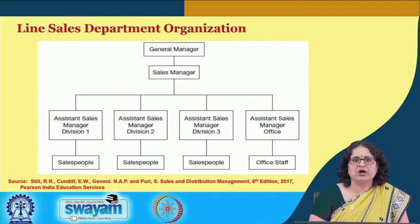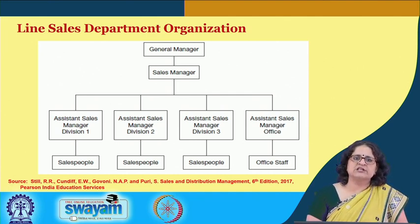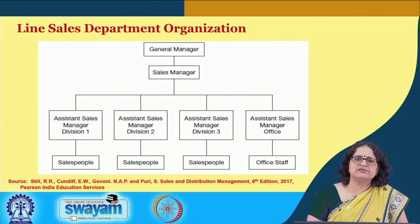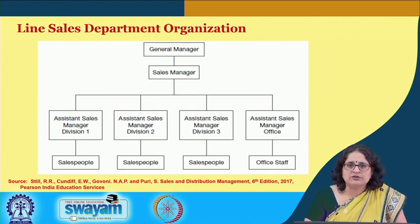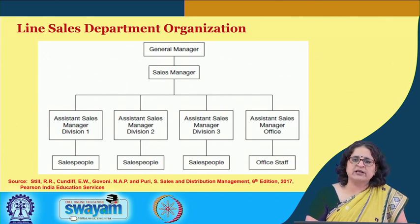In a line sales organization, you have a general manager, and under him the sales manager, then assistant sales managers for division 1, 2, 3, and 4. The assistant sales managers of the four divisions report to the sales manager. Under division 1, the sales division manager has several salespeople reporting to him. Similarly, assistant sales managers for divisions 2, 3, and 4 each have their own salespeople reporting to them, along with an office staff. So salespeople for a particular division report to the assistant sales manager, who reports to the sales manager, who is under the general manager.